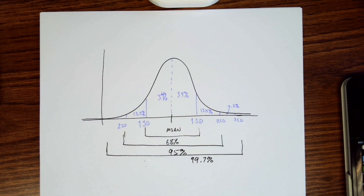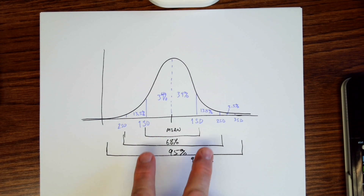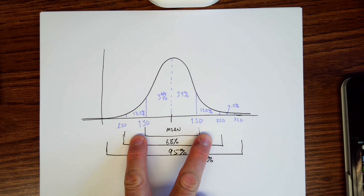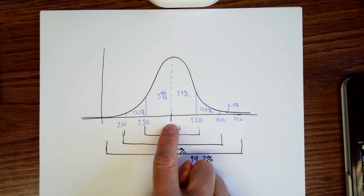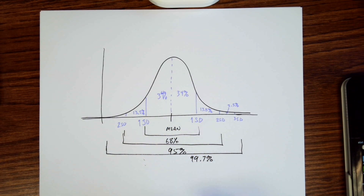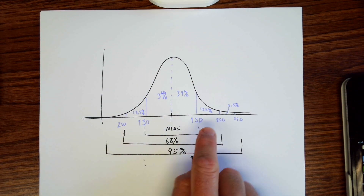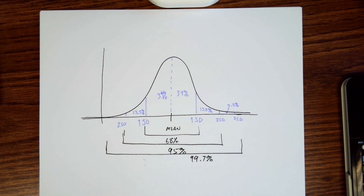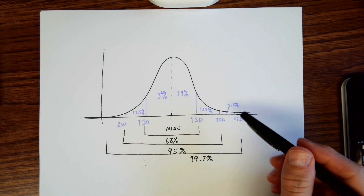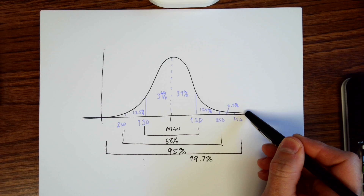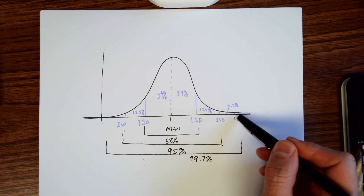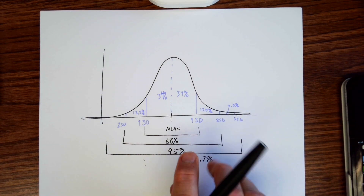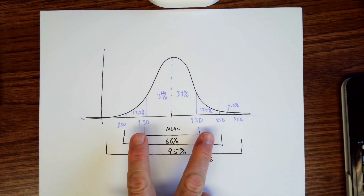Let's say this graph represents the height of US males. 68% of males in this country are going to be within one standard deviation of five foot nine — that's the average height for a male in the United States. One standard deviation is more or less plus or minus one inch or so, so five foot eight to five foot ten. When you start looking at really tall men, someone who is six foot three, you're talking about individuals who are way out here, moving into the realm of three standard deviations. Let's just say two inches is the standard deviation.